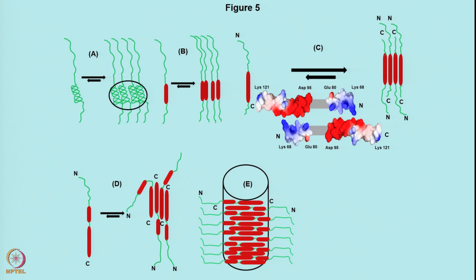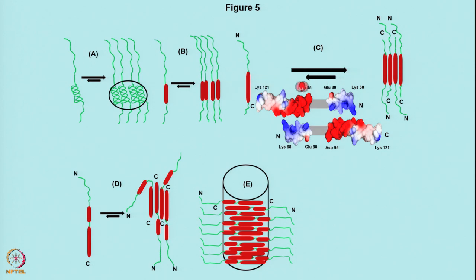Now let us look at what is happening from the structural point of view. The N-terminal has certain helical propensity. Going to the next step, these helices start aggregating transiently. Then the proper stable helical structure is formed and these helices start aggregating to form a helical aggregate. One can analyze this further — what sort of aggregate is formed, and are the chains oriented in the same or opposite directions? At this point we are not able to say whether the N-terminal and C-terminal are going parallel or in some other way.